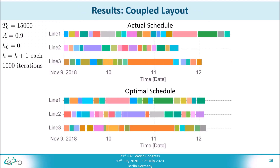Let's now look at some results of our scheduling algorithm. For the simulated annealing, an initial temperature of 15,000 was used. The parameter A was set to 0.9, and the exponential update parameter H, starting at 0, was increased by 1 each 1,000 iterations.